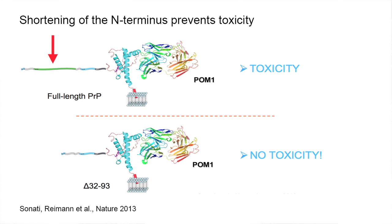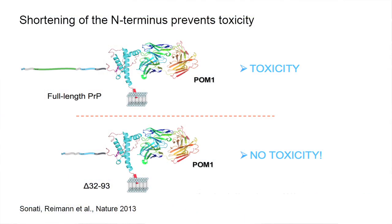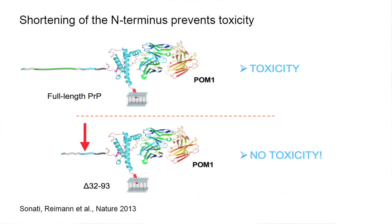The other thing we found that really got us going was the realization that if we make a variant of the prion protein that lacks part of the amino terminal — shown here as the normal prion protein attached to the cell membrane with its globular domain, and this is the interface to the antibody — if we make a variant that lacks this region, we can no longer transmit toxicity. The POM1 antibody will still bind, but the toxicity is now completely abolished.